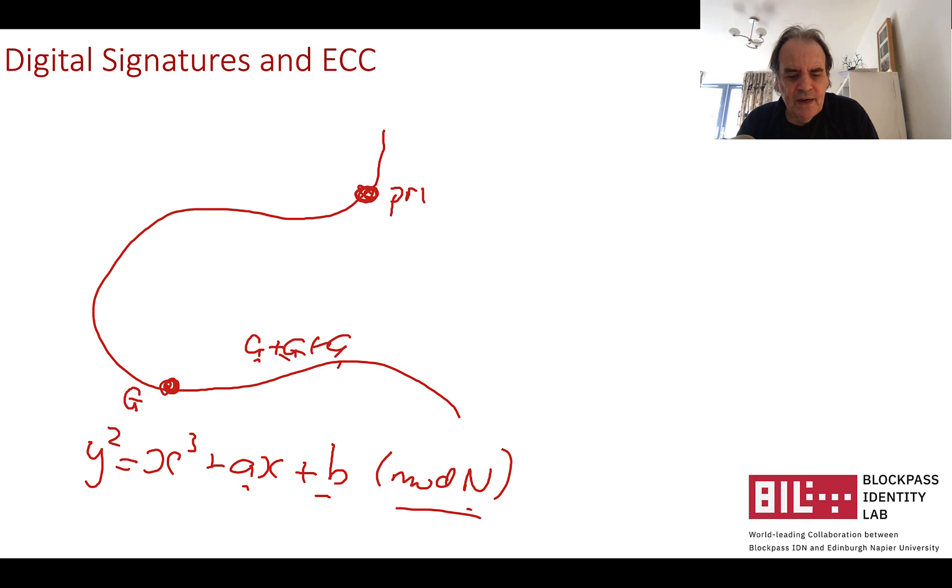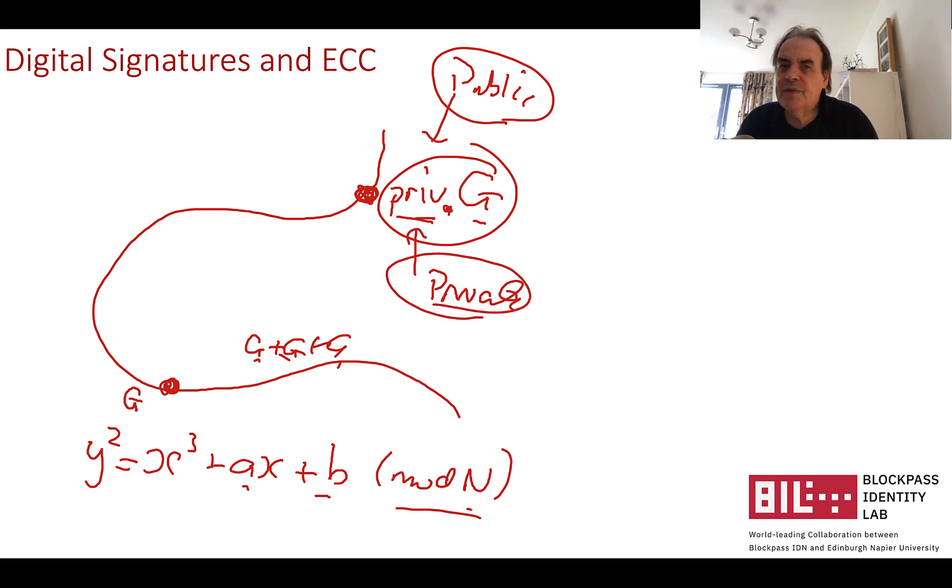We get another point on the elliptic curve which will be the number of times that we've added. Let's call it our private key, and the way we would represent it is like a multiplication private value times G or G added private times. So the private key becomes this value here and then the public key is the x,y coordinate of this private times G. That becomes our public key point and the private value is the number of times that we've added or multiplied G there. So the private key is typically a 256 bit random value and then we get the x,y value for the public key.